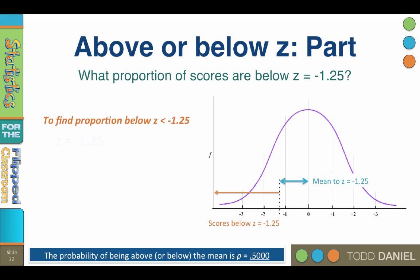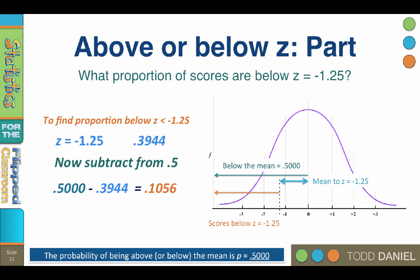First, we can go to the z-table and find the proportion of scores from the mean to negative 1.25. That value is 0.3944. We know that half of the scores are below the mean, a proportion of 0.5, so we need the remainder. We subtract our z-value from 0.5 to get the answer. 0.500 minus 0.3944 equals 0.1056.